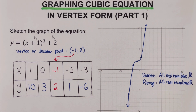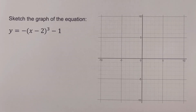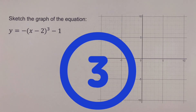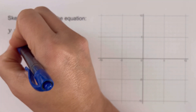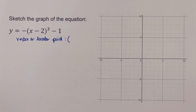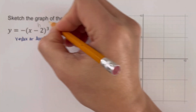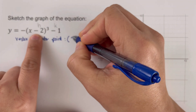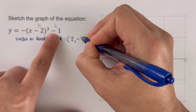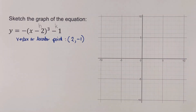For the next example, I encourage you to pause this video and try the problem on your own, then unpause and check your answer. The first step is again to determine the locator point or vertex. The coordinates of the vertex are (h, k). Switching the sign of h gives us positive 2, and keeping the sign of k gives us negative 1. So the vertex sits at (2, −1).